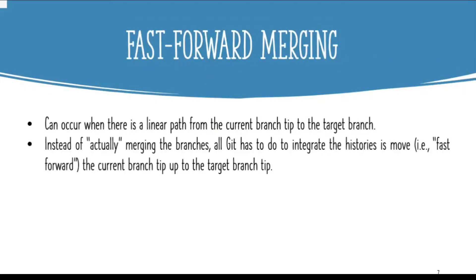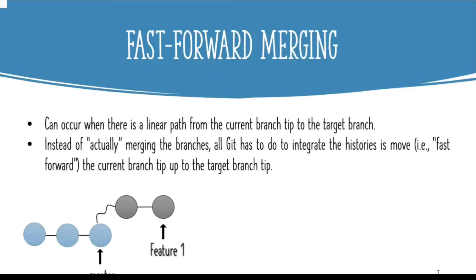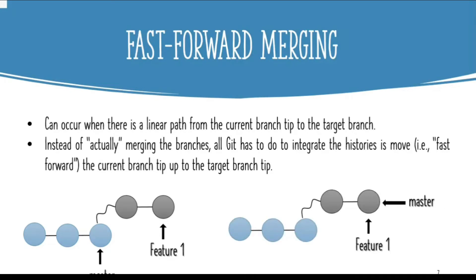No actual merging needs to take place in a fast forward case. Suppose this is our master branch pointing to a commit, and there's another branch named feature one. We want to merge these two branches, but we don't actually have to merge anything — we just have to add the contents of the feature branch into the master branch. Instead of actually merging, all git has to do is integrate the histories, and the master branch pointer will move forward to point to the feature one branch's tip commit.